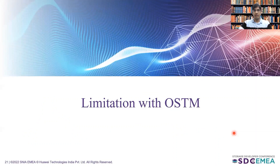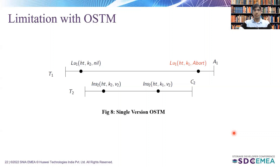Now let's understand the limitations of object-based schemes. We will explain the limitations with an example where we have two concurrent transactions T1 and T2. T1 is doing two lookup operations on data items K2 and K1, whereas T2 is performing two insert operations on the same data items K2 and K1. One can observe that this schedule is not serializable because the first operation of T1 returns the older value while the second operation of T1 reads the newer value. Due to that, this transaction returns abort — this is the limitation of object-based schemes.